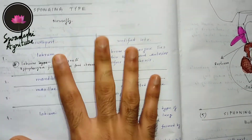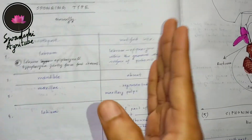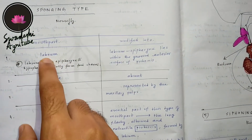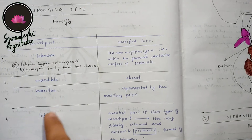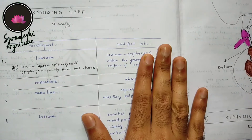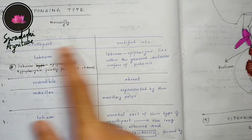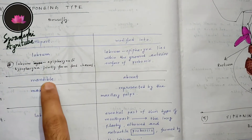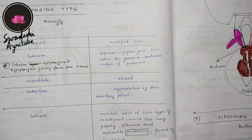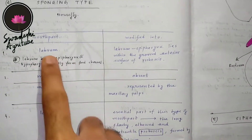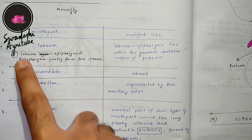As usual, I have made one chart mentioning mouthparts and how they are modified. Here we have to write down the labrum, mandible, maxilla, and labium. In this section we will discuss how the labrum is modified, how the maxilla is modified, how the mandible is modified, and how the labium is modified.